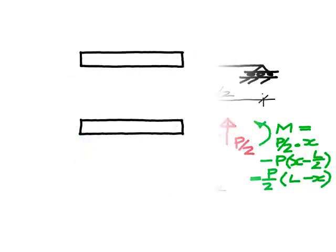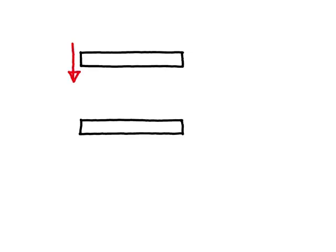Let's look at the shear forces more closely and introduce a sign convention. Any shear force which has a downward shear force on the left-hand side of the beam and an upward shear force on the right-hand side of the beam is called positive. Conversely, if we have a shear force which is up on the left-hand side and down on the right-hand side, we call that a negative shear force.